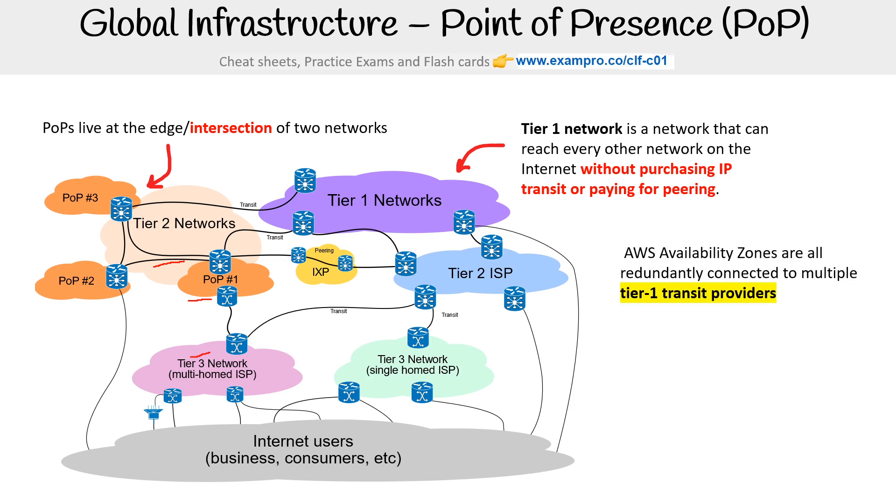And so the AWS availability zones (AZs) are all redundantly connected to multiple tier one transit providers.